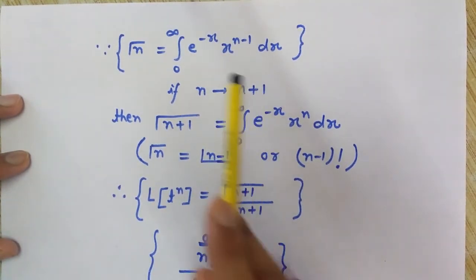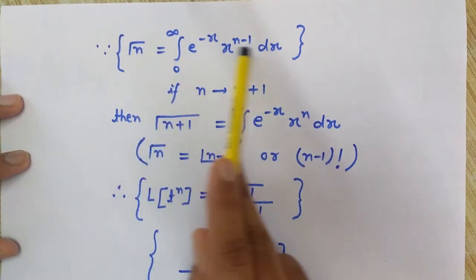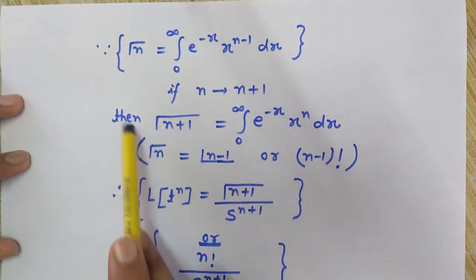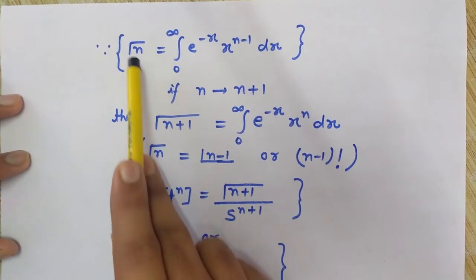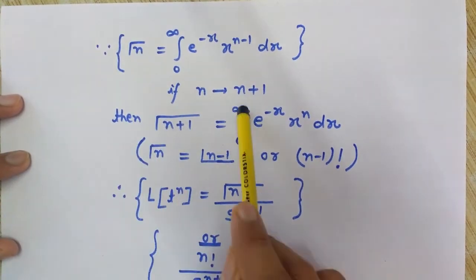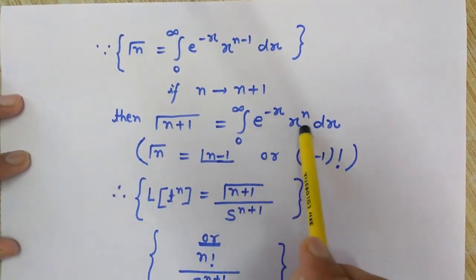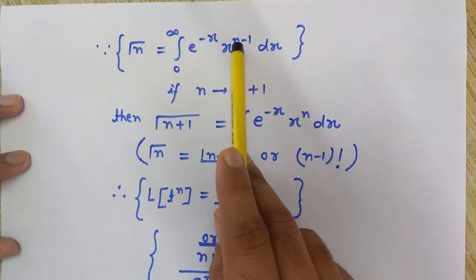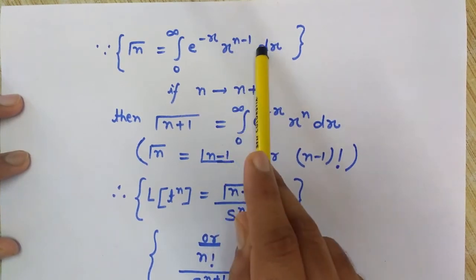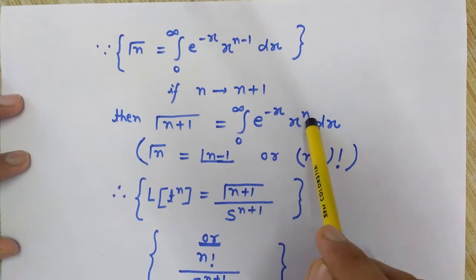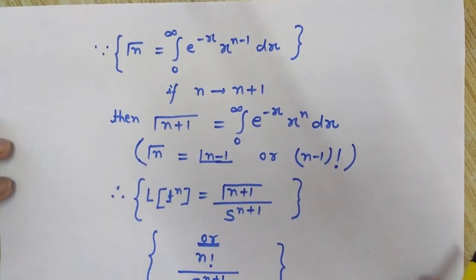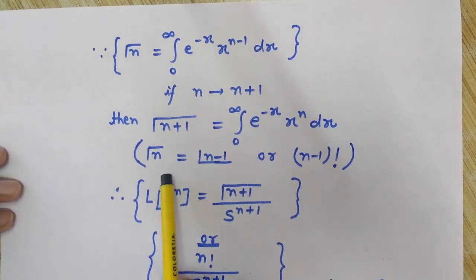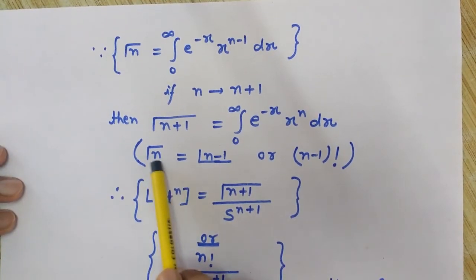If I replace n by n plus 1 in the gamma definition, I get gamma(n+1) equals the integral from 0 to infinity of e to the power minus x times x to the power n dx. So the integral in our expression is exactly gamma(n+1).